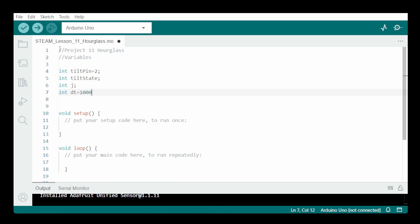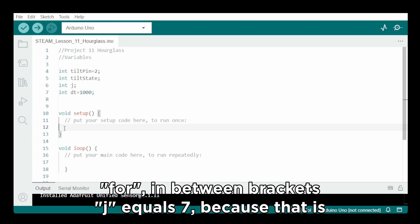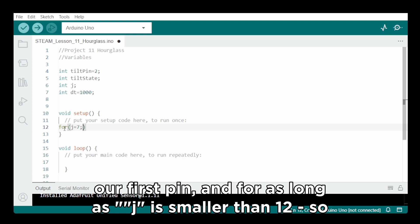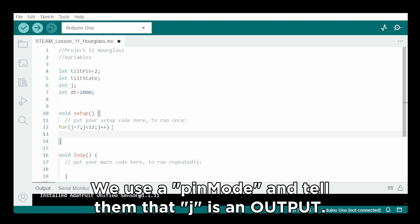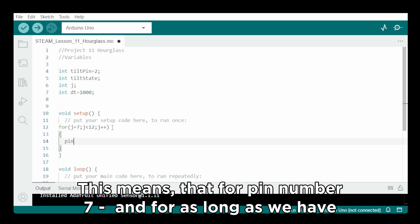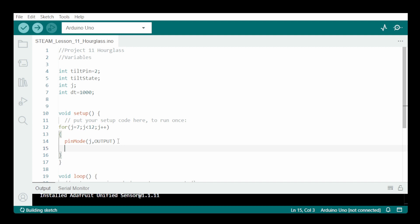Now we can go to the setup area. So we are going to set the pin mode for the 5 pins, one by one, using a simple for command. For, in between brackets, J equals 7, because it's our first pin. And for as long as J is smaller than 12, so up to 11, it is going to be J plus 1. And what do we do? We will use a pin mode and tell them that J is an output. So this means that for pin number 7, and for as long as we have not reached pin number 12, the pin mode of the pin is an output. The tilt pin is an input. So we declare it as pin mode, in between brackets, tilt pin, comma input.